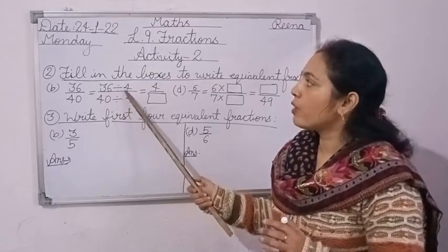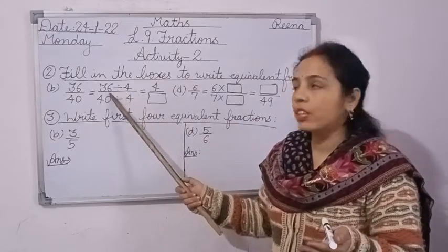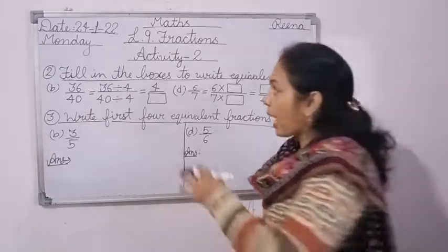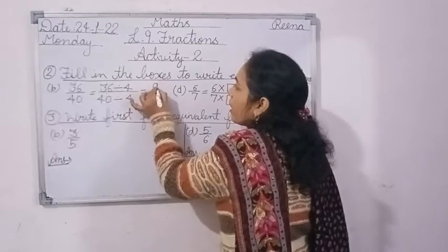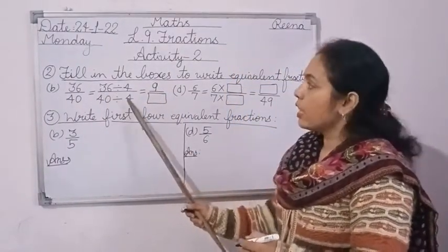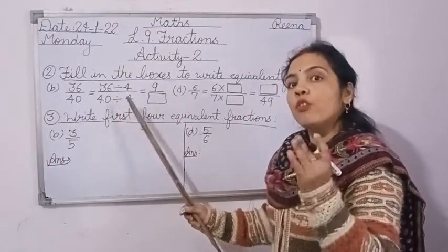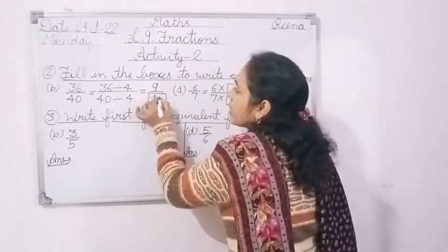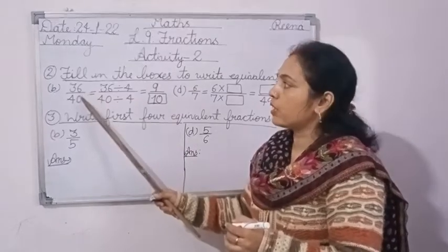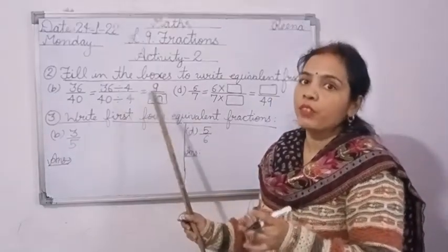In part B you have 36 divided by 4 upon 40 divided by 4. Read the table of 4: 4 times 9 is 36, so write 9. Then 4 times 10 is 40, so write 10. That means 9 upon 10 is the equivalent fraction of 36 upon 40 — both are equivalent fractions.